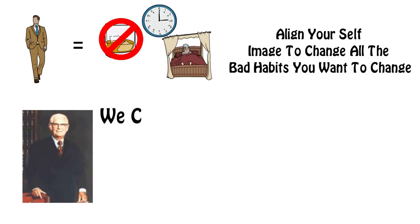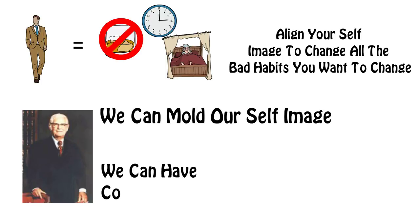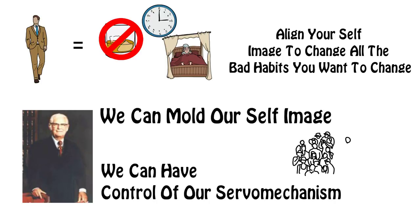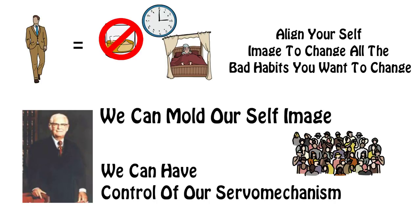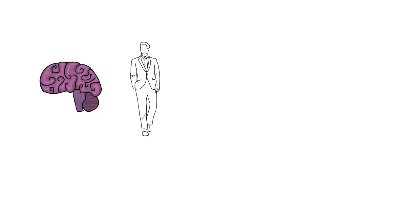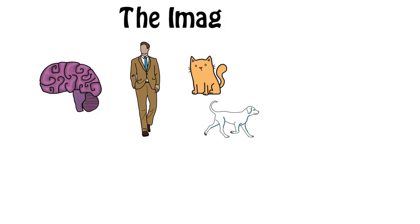As Dr. Maltz explains, we can actually build and influence our self-image, putting us in control of our servomechanism rather than leaving it to the environment to control. The way we do this is by using a little brain hack, an ability that differentiates us from any other species on the planet. Our creative mechanism. Our imagination.